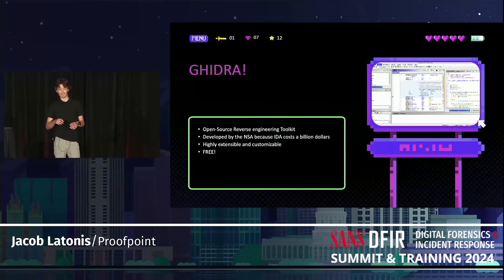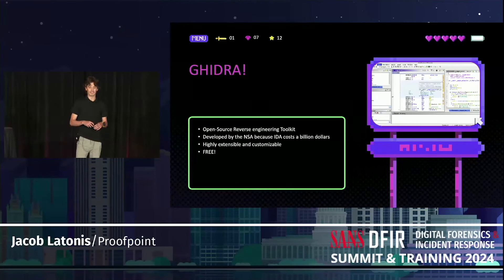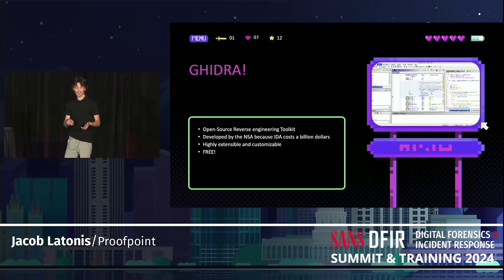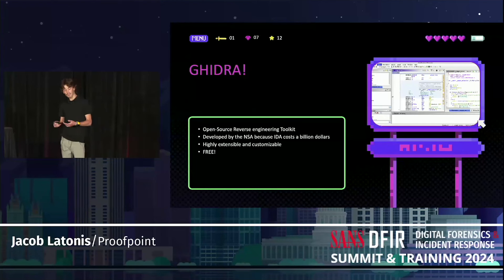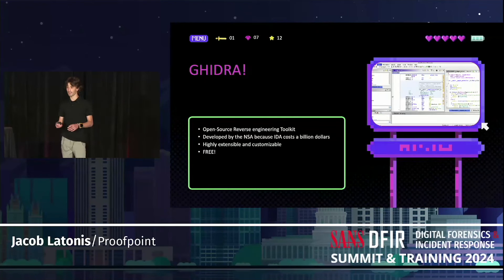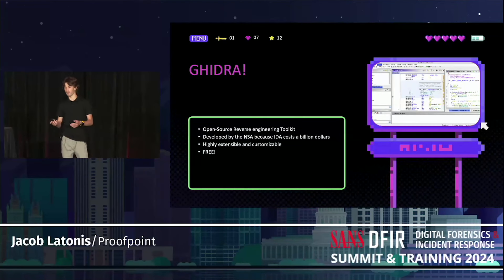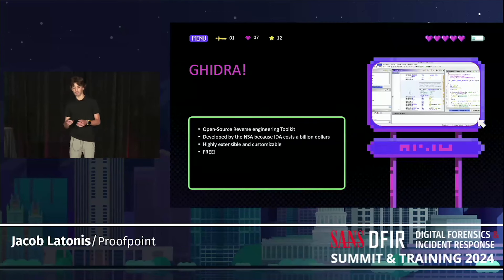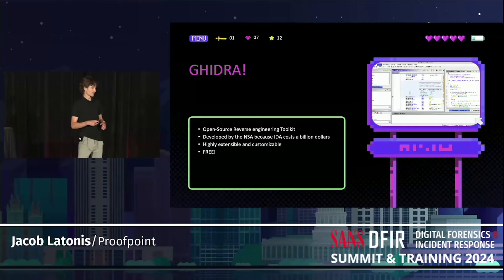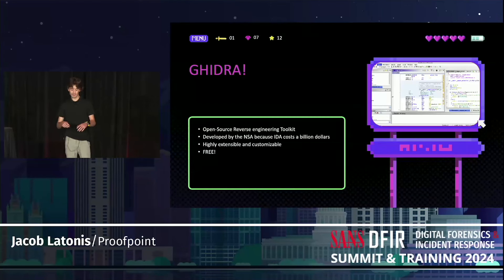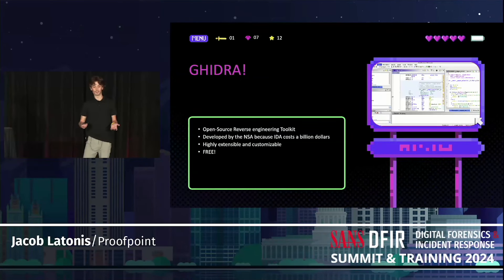If you're not familiar with Ghidra, it's an open source reverse engineering toolkit developed by the NSA — because IDA costs at least a billion dollars a license. It's highly extensible and customizable. Being written in Java means you can implement features from other parts of the code, or overwrite things and gain new behaviors without re-implementing all of it. And it's also free, which is why I decided to focus on Ghidra instead of a paid license tool like Binary Ninja or IDA Pro.